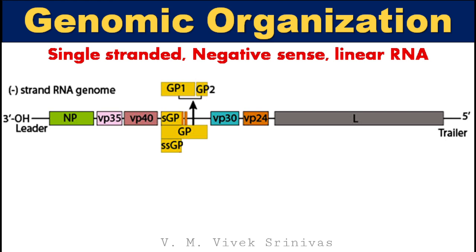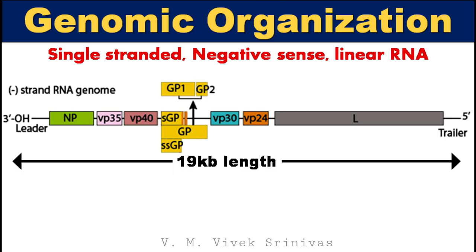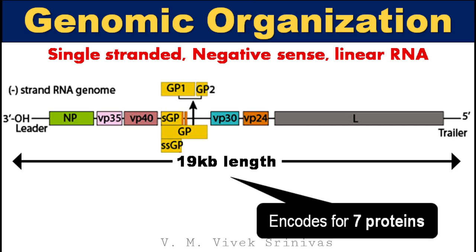Genomic organization: the genome is single-stranded, negative-sense, linear RNA. The genome length is 19 kilobase pairs, and it encodes for 7 proteins.